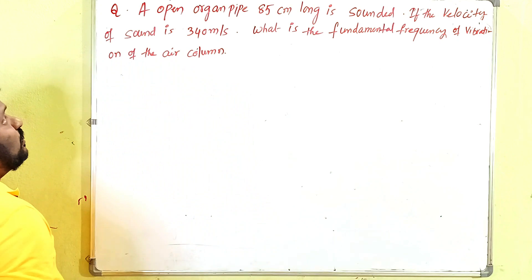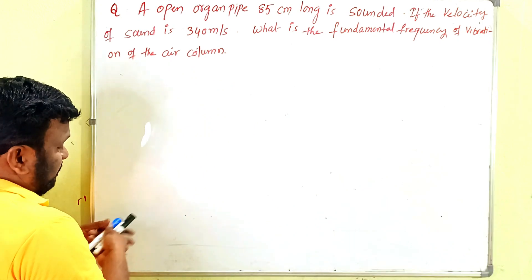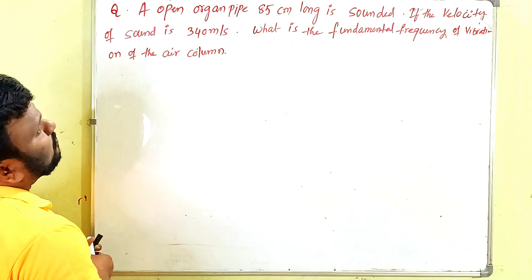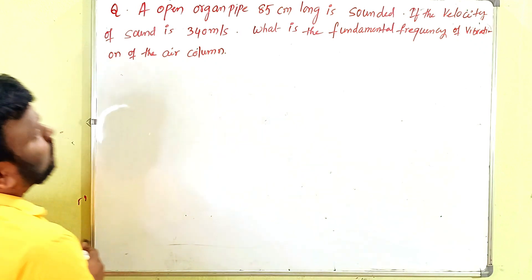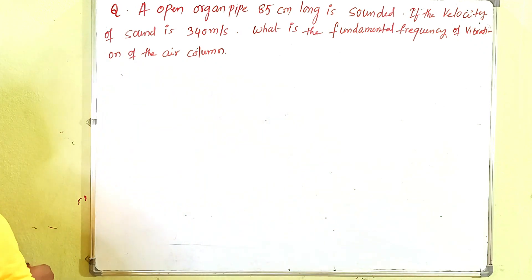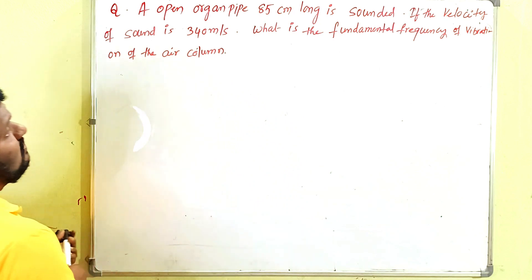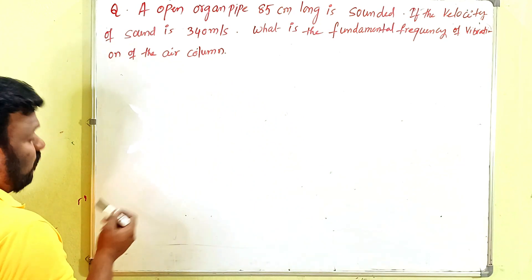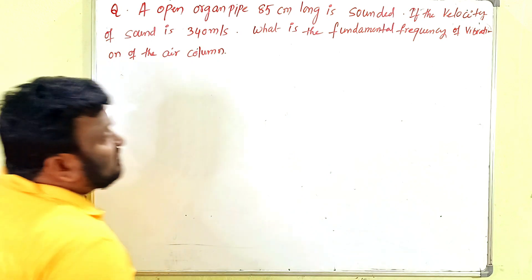The question will be like this: an organ pipe 85 cm long — if the velocity of sound is 344 meters per second, what is the fundamental frequency of vibration of the air column?